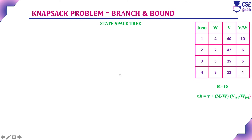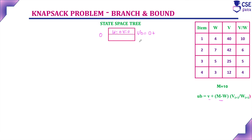The initial state space tree: at the zeroth level, without considering any item, that is the initial stage. Here W is 0 and V is also 0. The upper bound value: V is 0 plus M minus W, where M is the maximum capacity, so 10 minus 0 equals 10, multiplied by the value-by-weight ratio of the next item, which is 10. So here we get the upper bound value 100. This is the initial stage, considered as item 0.